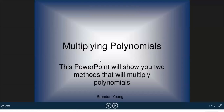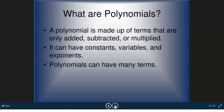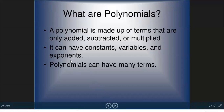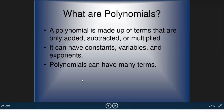A polynomial is made up of terms that are only added, subtracted, or multiplied. It can have constants, variables, and exponents, and a polynomial can have many terms.